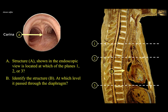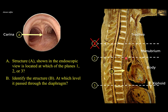Now looking at levels 1, 2, or 3 in this sagittal section of the thorax: we can see the manubrium of the sternum, the body of the sternum with evidence of segmentation, and the cartilaginous xiphoid process — indicating a young subject. Level 1 passes through the upper border of the manubrium, which is not at the level of tracheal bifurcation. The trachea bifurcates at the level of the sternal angle, number 2, which is the manubriosternal joint between the manubrium and body of the sternum. So structure A is located at plane 2.